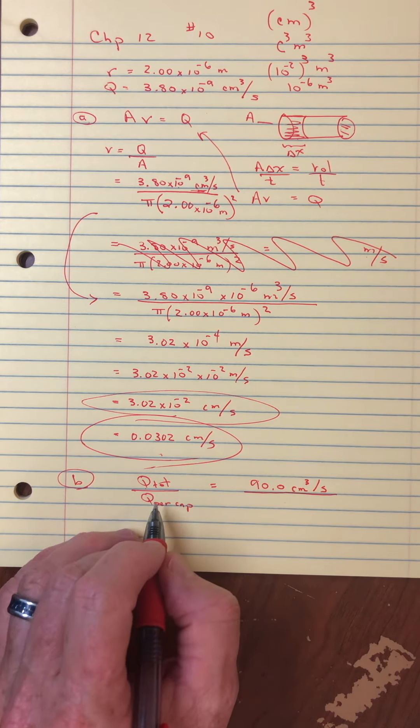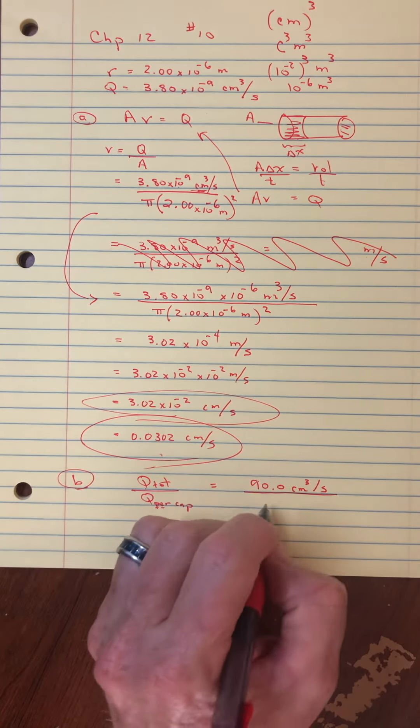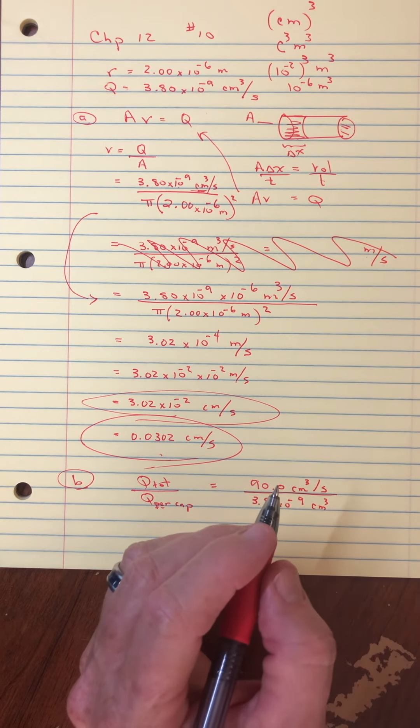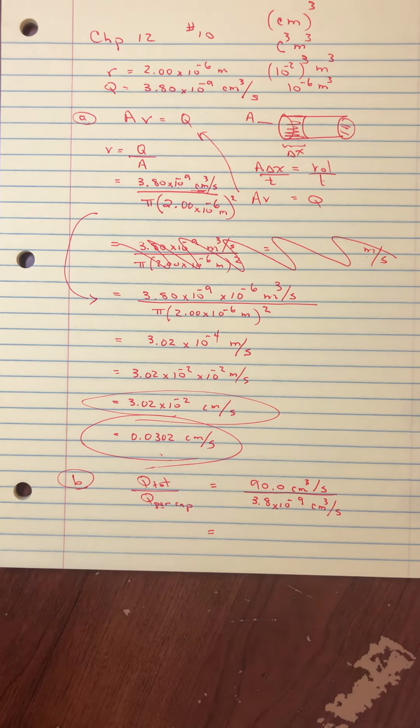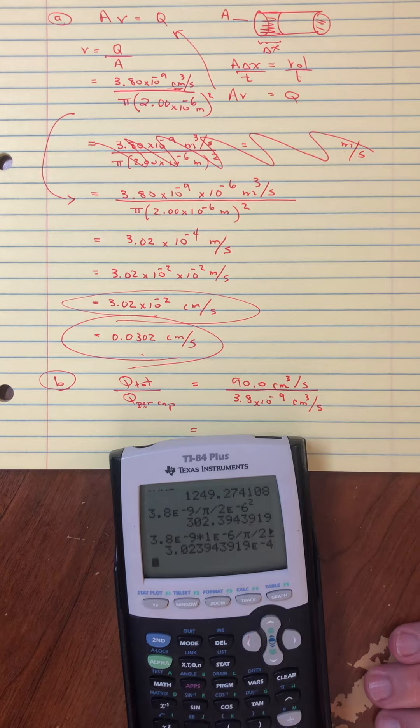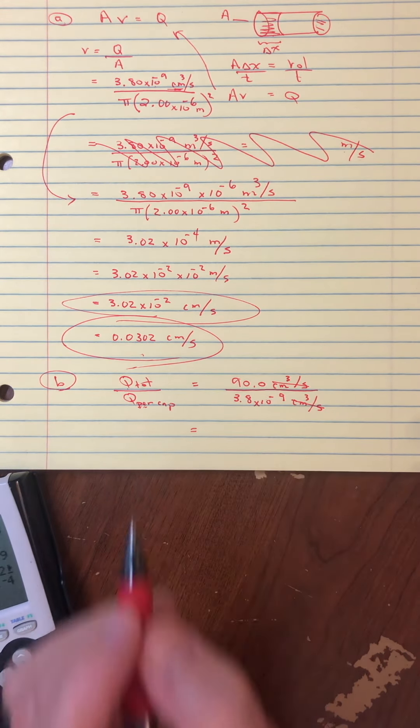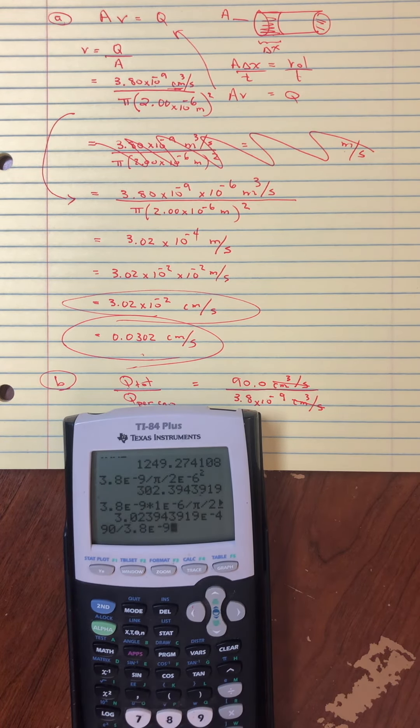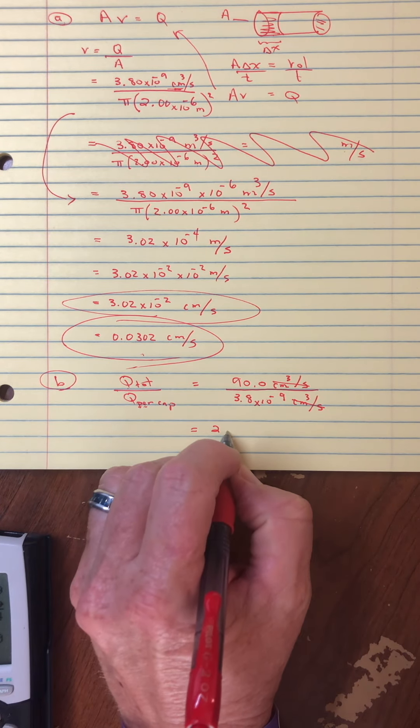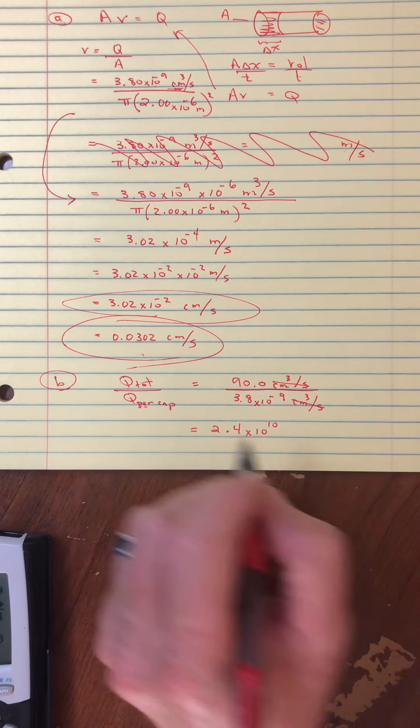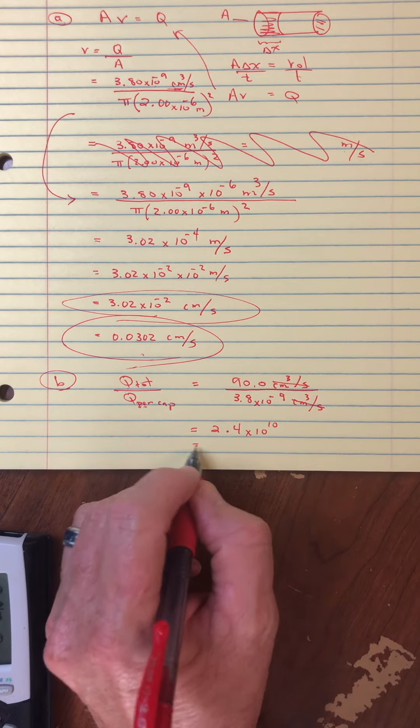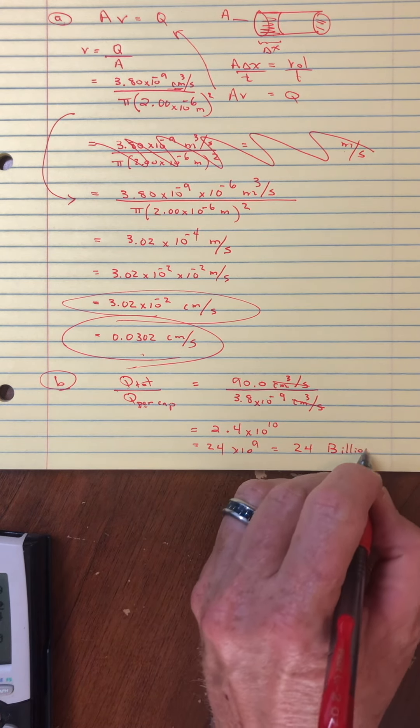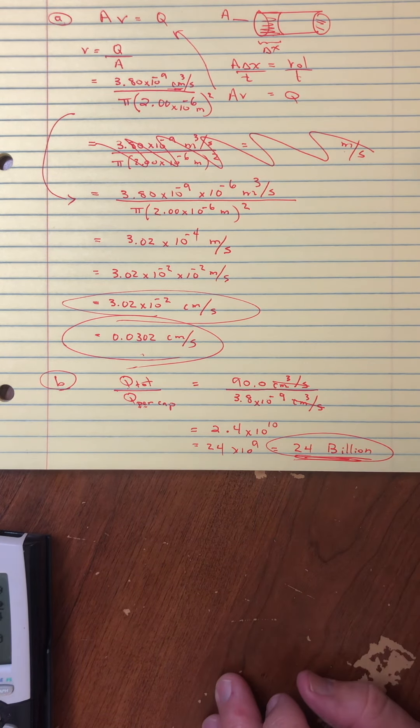So the big flow or the total through the body is they're trying to say 90.0 cubic centimeters per second. So that's the total flow through the body, and I guess that's a reasonable number. Now, the flow per capillary is 3.8 times 10 to the minus 9 cubic centimeters per second. And so this quotient would tell us how many capillaries there are. And maybe I'll just cancel off the units. No units, because we're just going to get a number. So in the top, we have 90. In the bottom, we have 3.8 times 10 to the negative 9. And it looks like I'll call it 2.4 times 10 to the 10th capillaries.